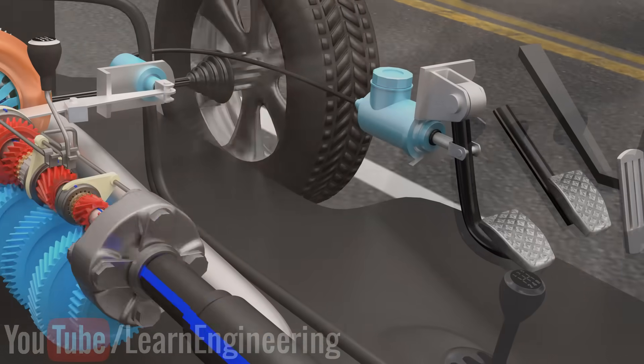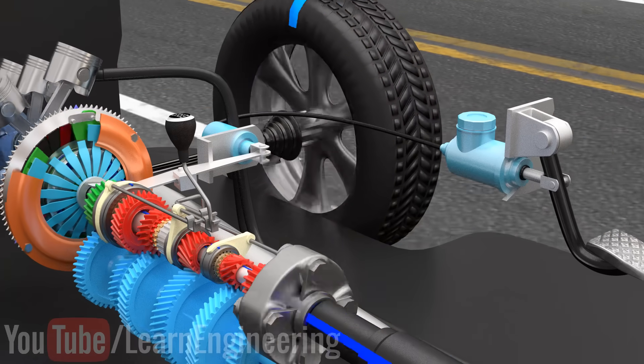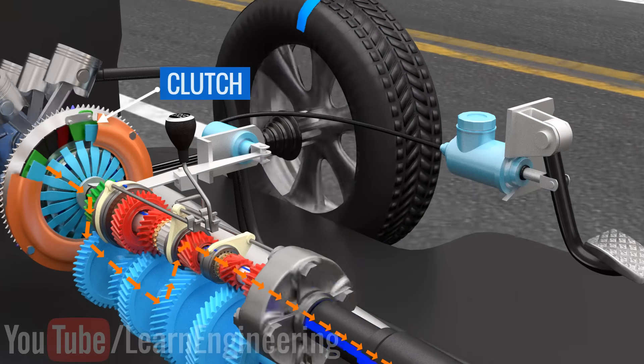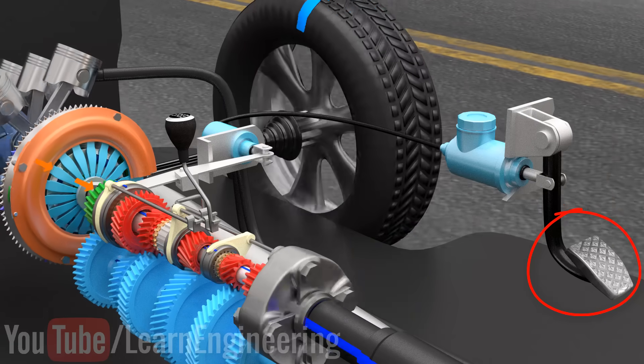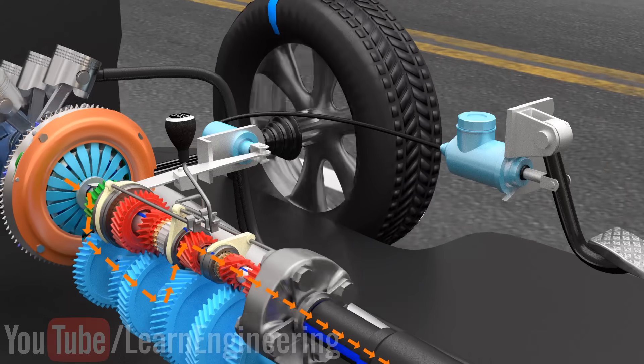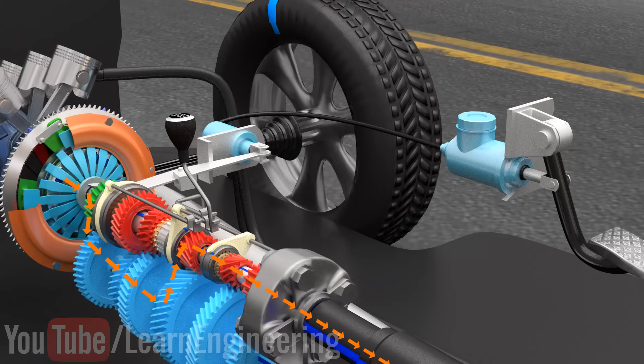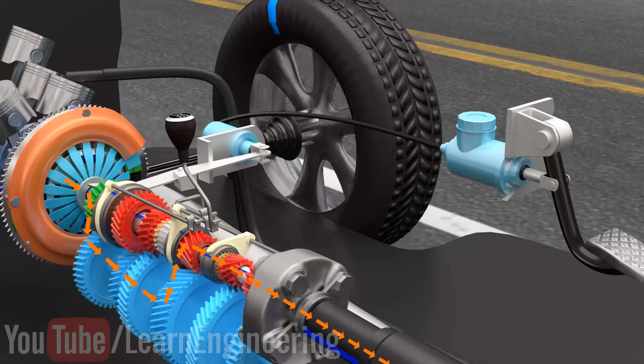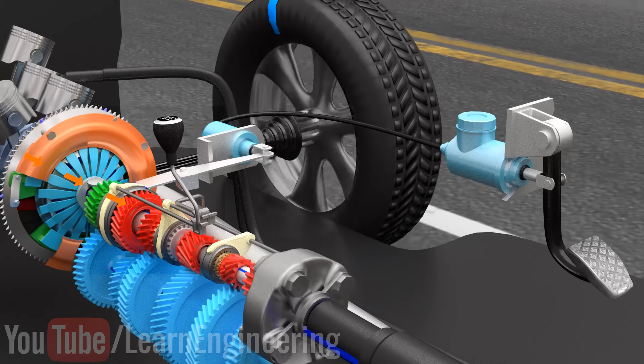The clutch sits between the engine and the transmission. Basically, a clutch is a mechanism to discontinue the flow of power from the engine to the transmission. In a manual transmission, gear changes can only happen when there is no power flow to the transmission. And by pressing the clutch pedal, you make sure that the power flow is discontinued.